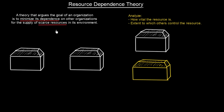We all know that every organization has some scarce resources — maybe it can be skilled personnel, raw materials, machinery, or whatever. Every organization has some scarce resources, and essentially we are dependent on other organizations when it comes to the supply of these scarce resources. So if we are going to operate according to Resource Dependence Theory, our goal is to minimize that dependence on other organizations.